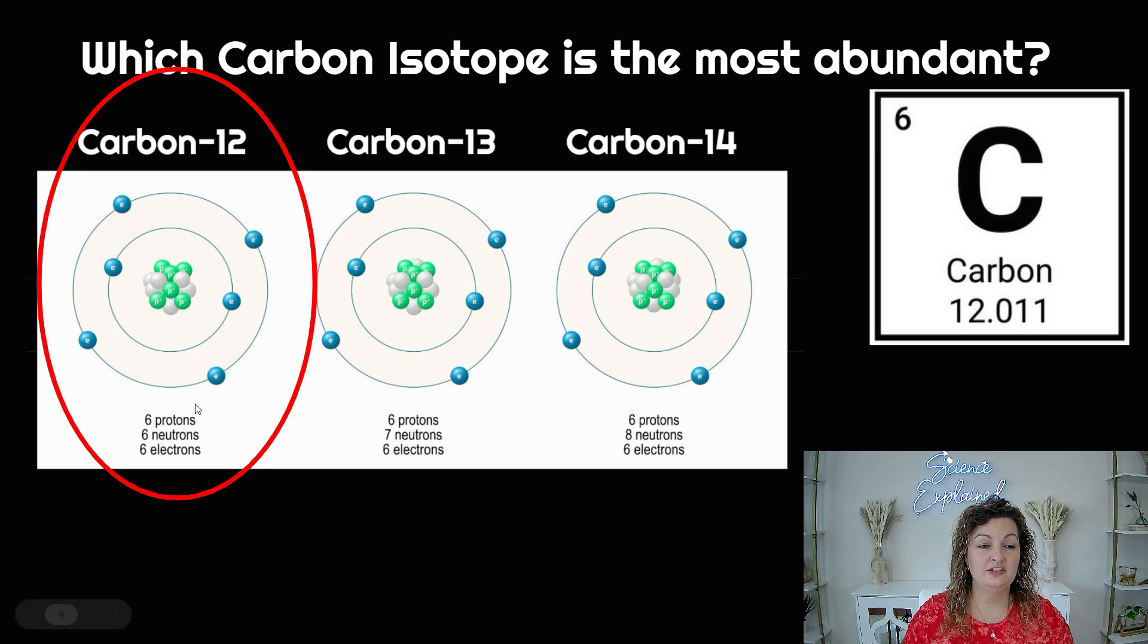So carbon-12 is going to be it. And we can see if we added up our protons and neutrons, we would get 12. If they did not give you this, you can always just add those up to see what the mass is. So this one is going to be the most abundant in our universe. There are carbon-13 and carbon-14 out there, which is why we have a decimal in the first place.